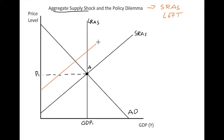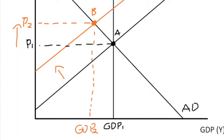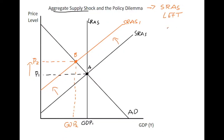A leftward shift of short-run aggregate supply causes the entire curve to shift leftwards, as shown — we can indicate that with our arrows. We reach short-run aggregate supply one, with a new equilibrium point B in the short run, where the price level is now higher at P2 and the output level is now lower at GDP2. This is a classic example of what we call stagflation — a combination of rising prices (inflation) with falling output, so a stagnating real economy in output and an inflating economy in terms of prices.